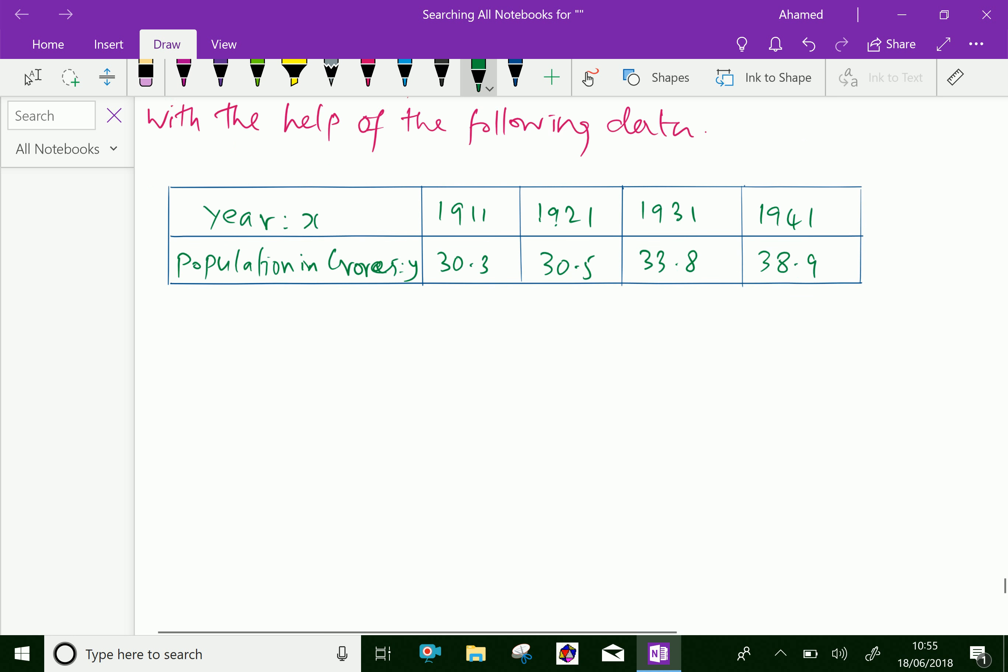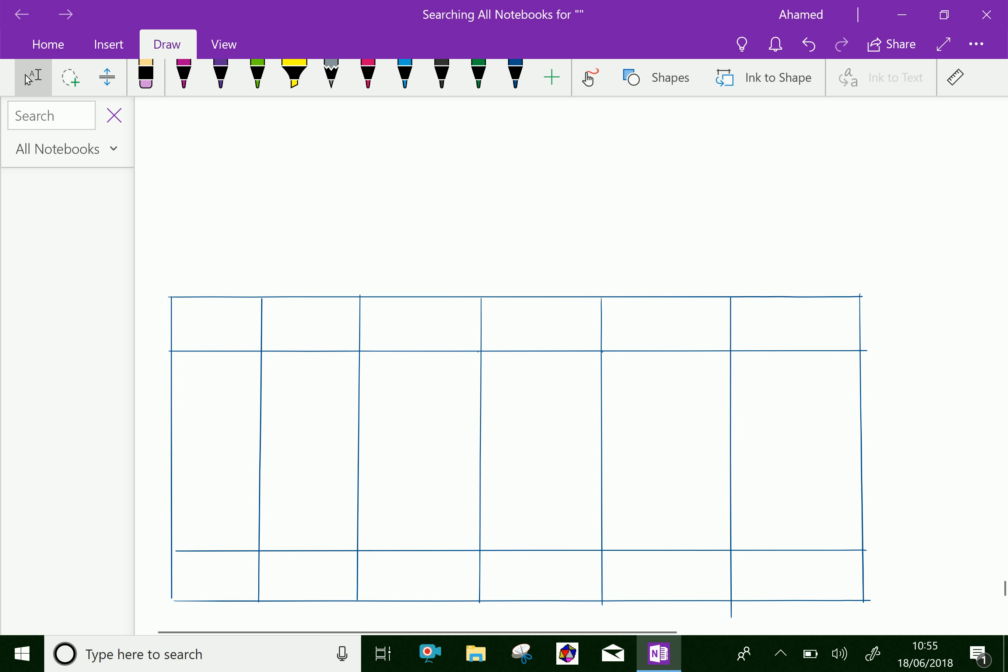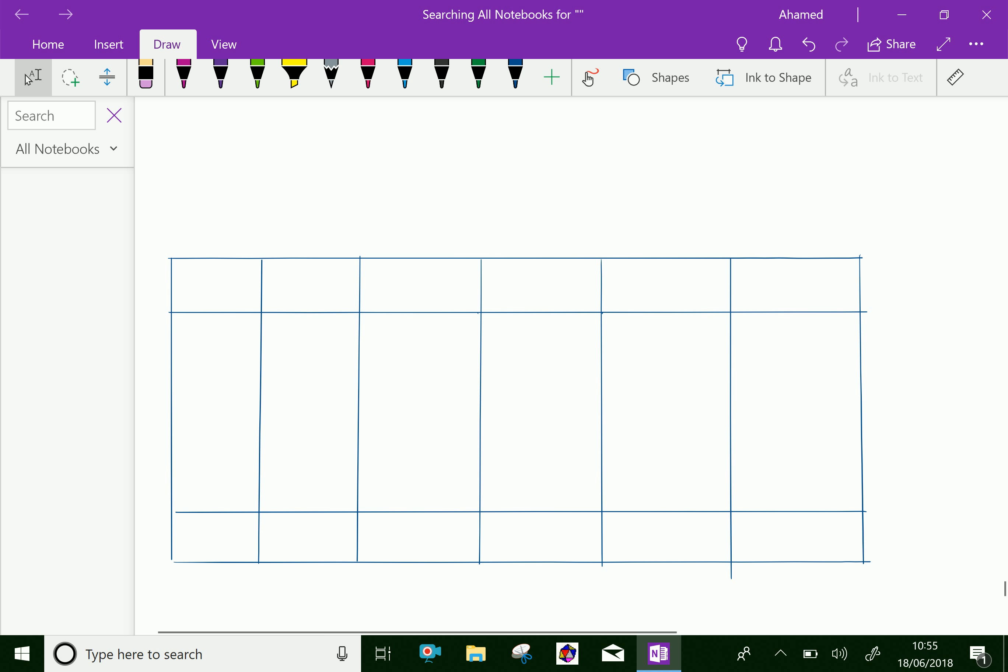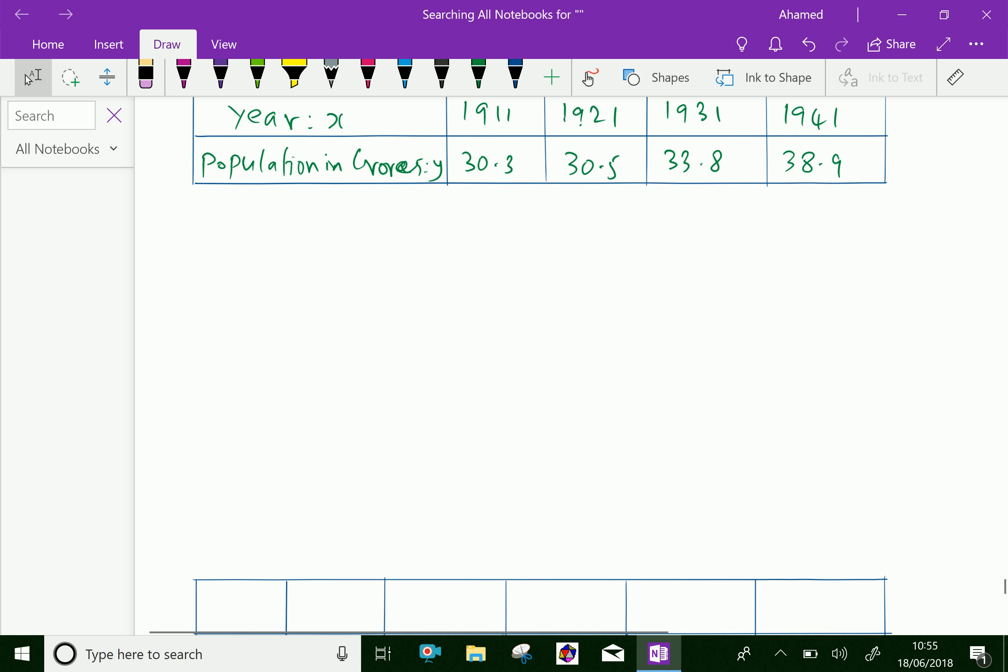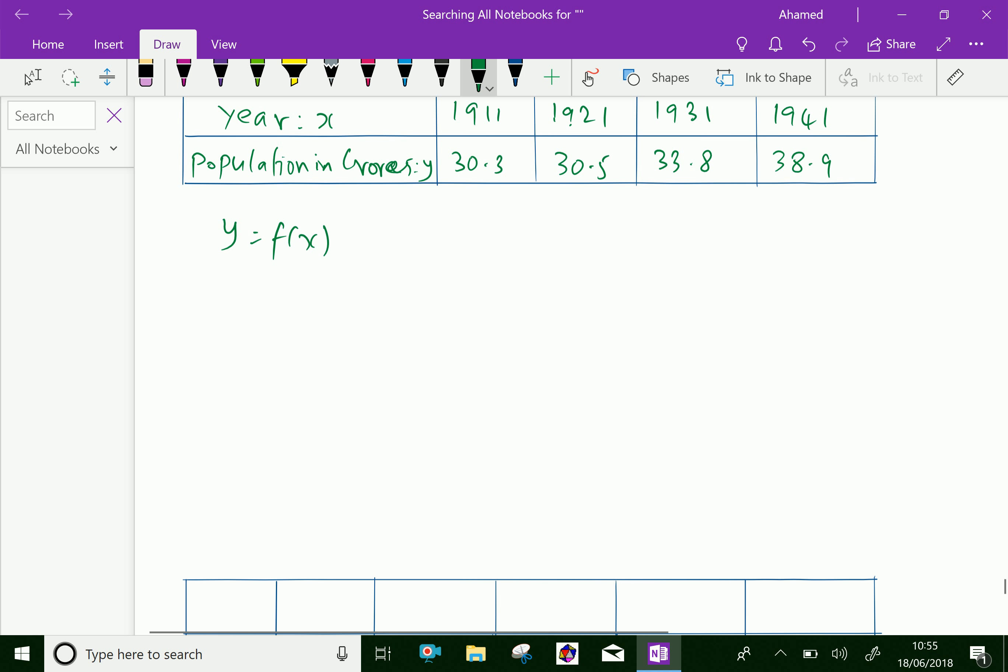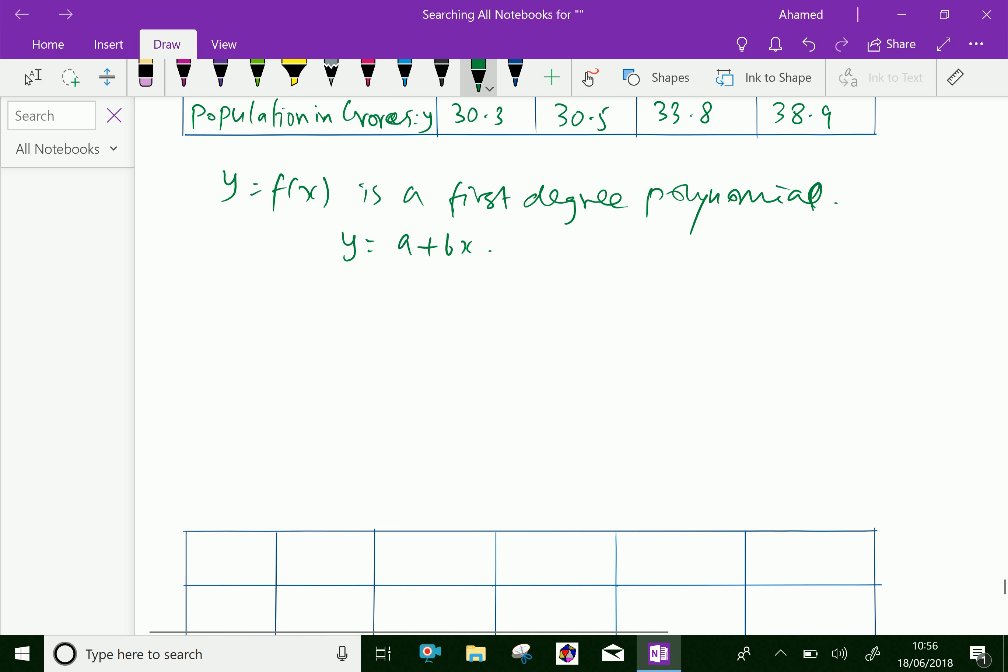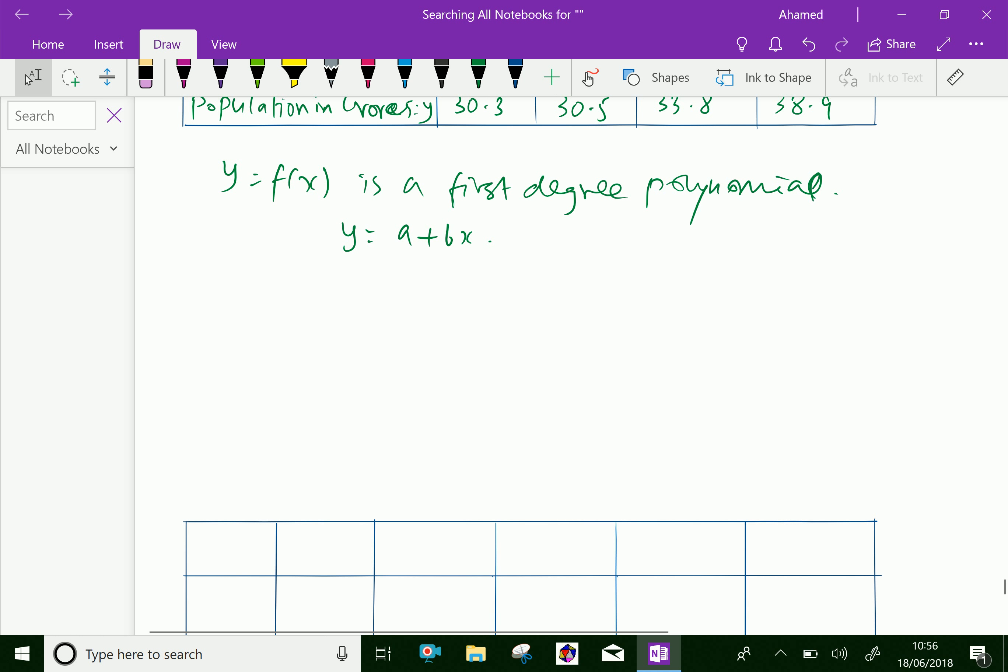Now, we will fill the table with these observations. Here, let us assume that the function y equal to f of x is first degree polynomial, means linear function. That is y equal to a plus bx. Then we want to find the values of a and b, that is the constants, from the given data to get the fitted curve. The calculation can be filled in tabular form.